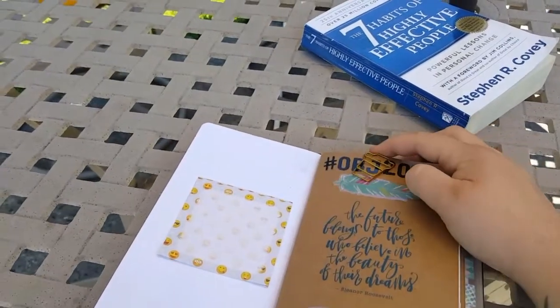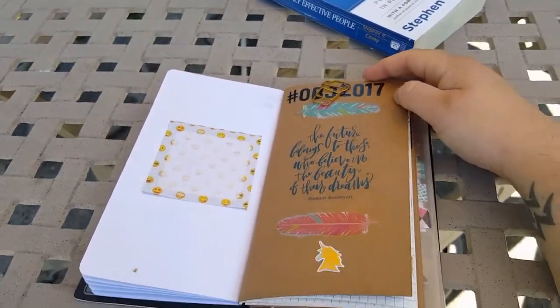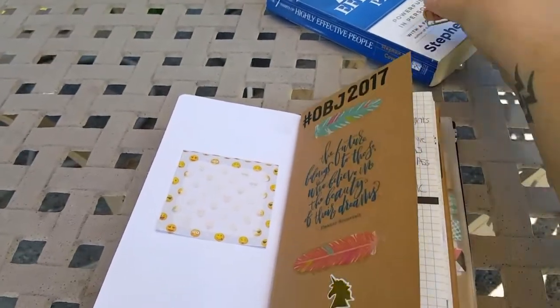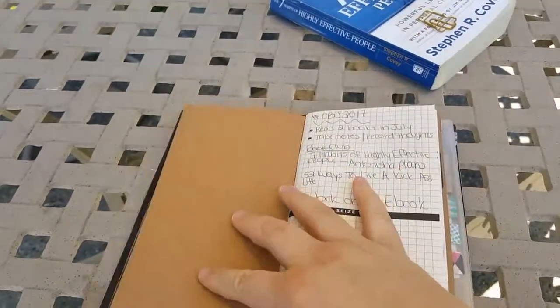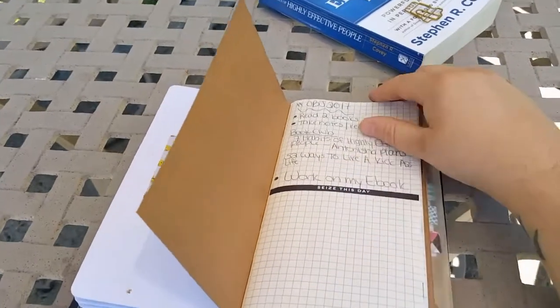Here's my One Book July 2017 notes notebook. Let me take that off. This was what my goals were for the month.